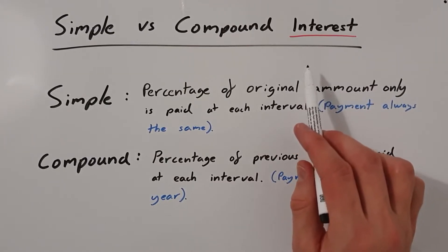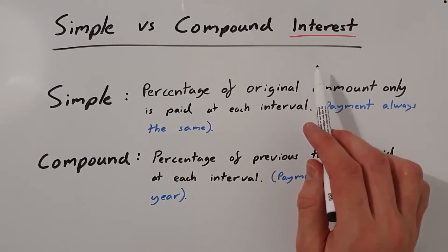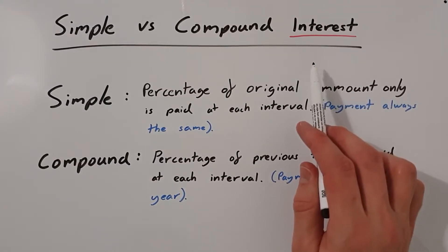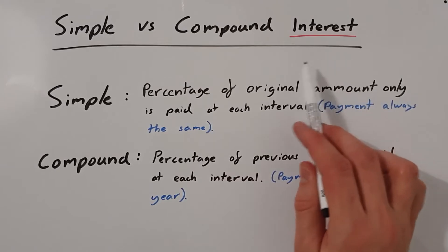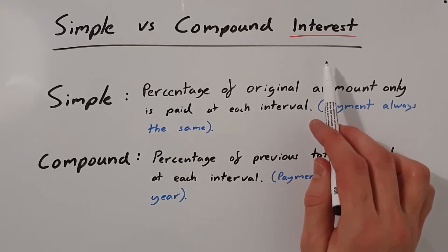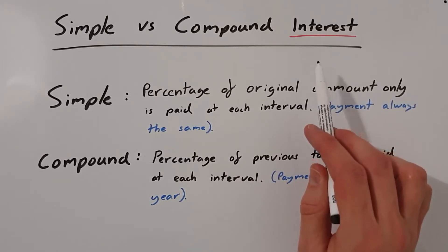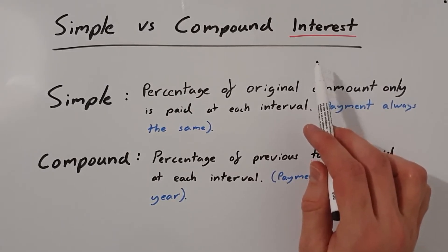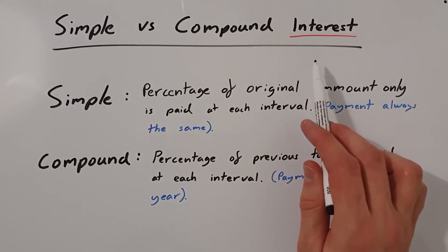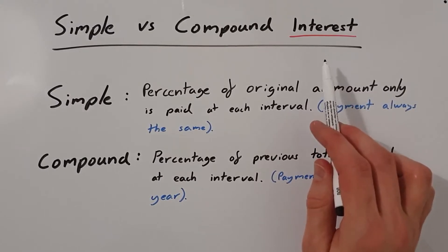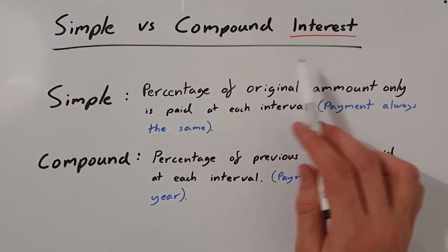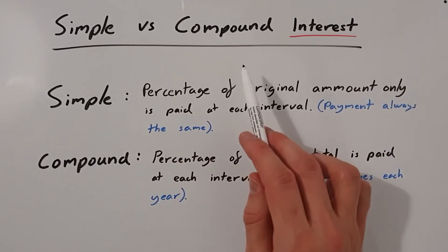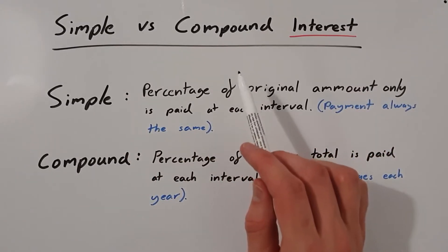When we talk about interest it is usually always to do with money. For example if you had some money in a bank account your bank would usually pay you some interest, or in the case of a loan you'd usually have to repay a little bit more money on top of what you owed already — that is called the interest. There are two types of interest we'll be looking at: simple and compound, and we'll look at what they are and what's the difference.